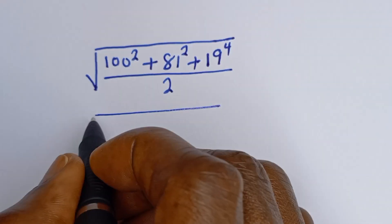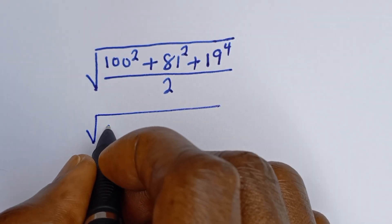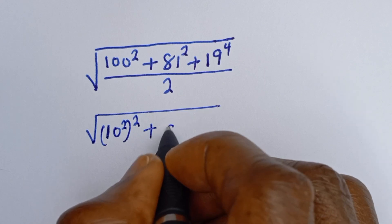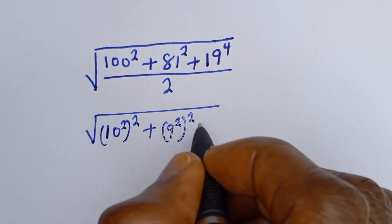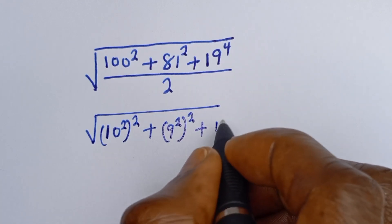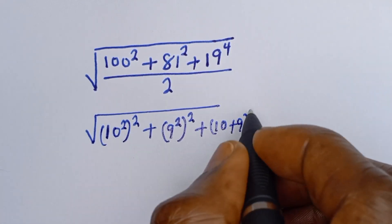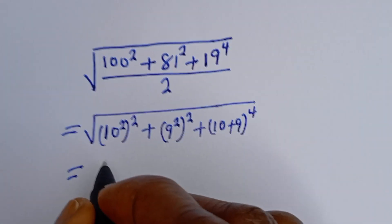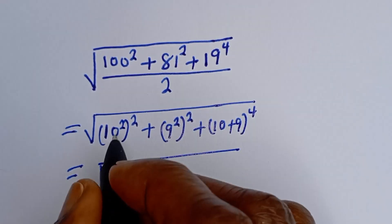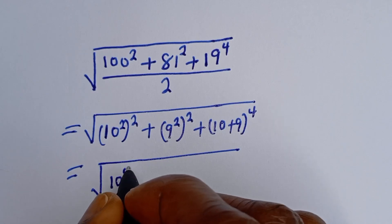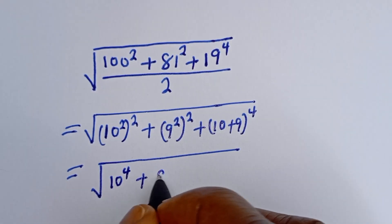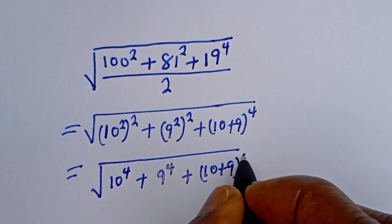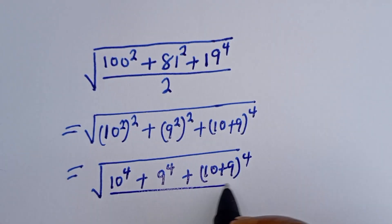Here we have square root of 100 squared, completing as 10 to the power of 4, plus 81 squared completing as 9 to the power of 4, plus 19 to the power of 4 completing as (10 plus 9) to the power of 4. Then all divided by 2.